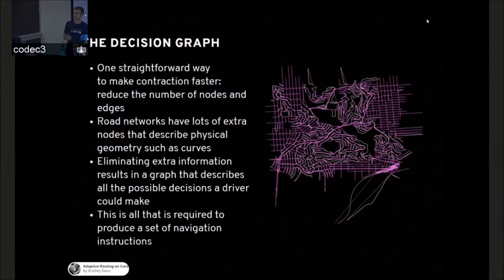So one way we can do that is by reducing the number of nodes and edges that go into the contraction process. Road data is kind of littered with geometry information that's not important to making driving decisions, like where you're going to turn next. And so we can eliminate all of these edges that describe curves and other features that aren't important. And that leaves a graph with only straight lines, and that's all we need to produce a set of directions like you would print out online.